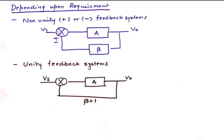We have non-unity positive or negative feedback systems just like the one we have here where beta will be some impedance depending upon R, LC, it will be reactive, capacitive reactance, inductive reactance or purely resistive.